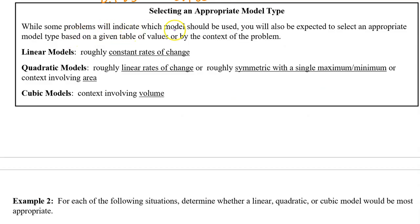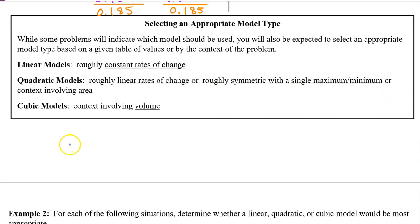On the last problem we were told to use a particular linear regression model, but sometimes we have to select an appropriate model ourselves. We should use a linear model if the rates of change are roughly constant. We will use a quadratic model if we have roughly linear rates of change. We will also use a quadratic model if the data appears roughly symmetric with a single minimum or a single maximum. We will also use a quadratic model for modeling area. And similarly, we will use a cubic model when modeling volume.